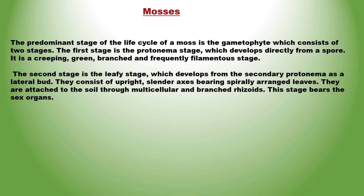Mosses की life cycle में प्रमुख अवस्था gametophyte होती है। इसमें दो stages होती हैं। Protonema stage यहाँ first stage है, जो directly spores से उत्पन्न होती है। यह creeping, green, branched और filamentous stage है।